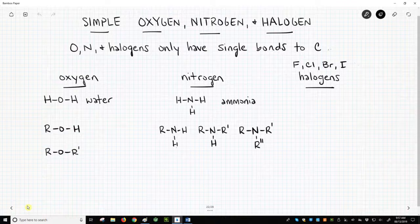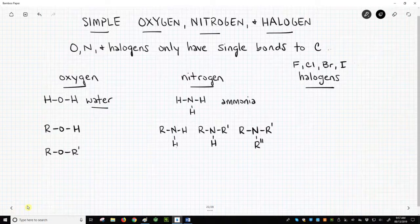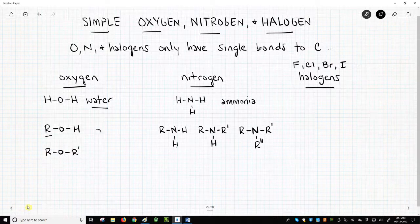Let's start with oxygen. Oxygen can have two bonds. Water is an example of an oxygen-containing molecule. If we replace one of the hydrogens with a carbon group, let's say an R group, then we have a new functional group. This is called an alcohol.